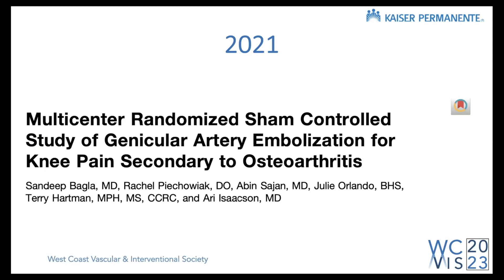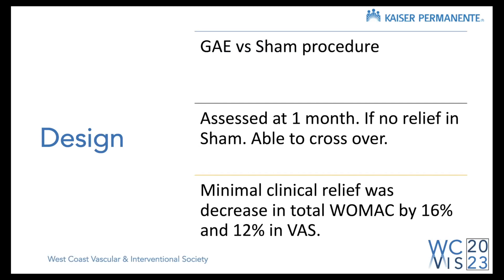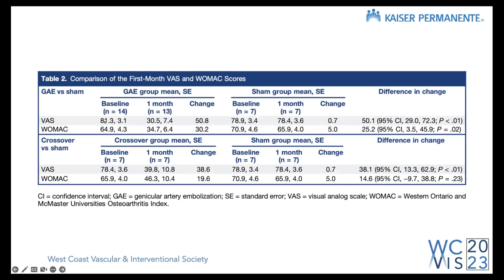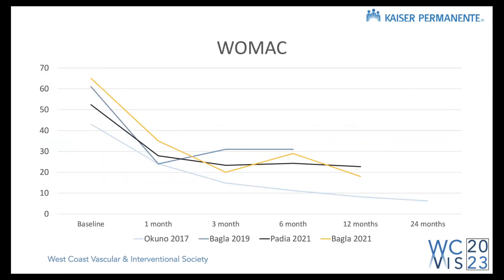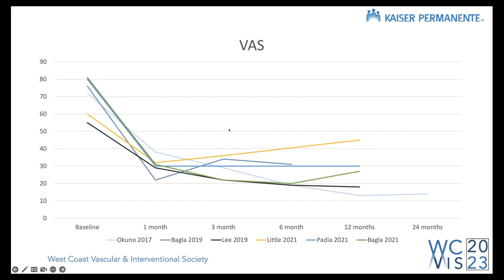Fast forward to 2021, one of the first major randomized controlled trials was published by Dr. Bagla and their team, comparing GAE to a sham procedure — important when dealing with pain to show effects are real and not placebo. Patients randomized to sham or GAE were assessed at one month. There was a significant decrease in visual analog scale and WOMAC questionnaire scores at one month that was not seen in the sham group. The sham group crossed over and showed similar positive results, further supporting the procedure's efficacy and durability out to 12 to 24 months.